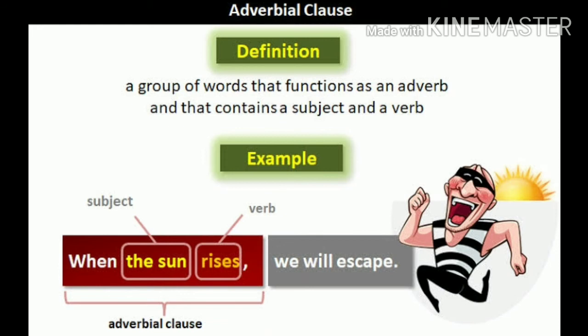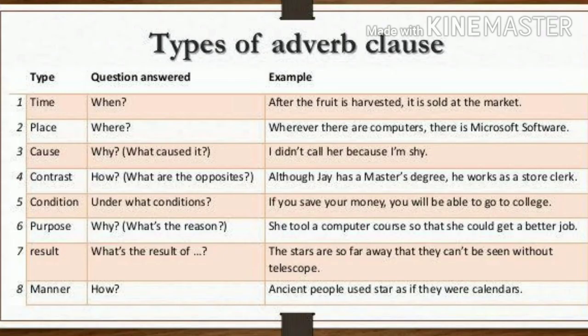Types of adverbial clauses: 1. Adverb of time — When? 'After the fruit is harvested, it is sold at the market.' 2. Adverb of place — Where? 'Wherever there are computers, there is Microsoft software.' 3. Adverb of cause or reason — Why? 'I didn't call her because I am shy.'